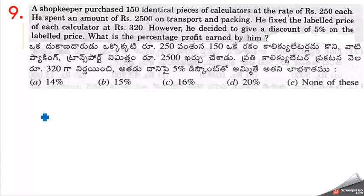Next question. A shopkeeper purchased 150 identical calculators at the rate of 250 rupees each. He spent 2500 rupees on transport and packing. He fixed the labelled price of each calculator at 320 rupees. He decided to give a discount of 5% on the labelled price. What is the percentage profit earned by him?